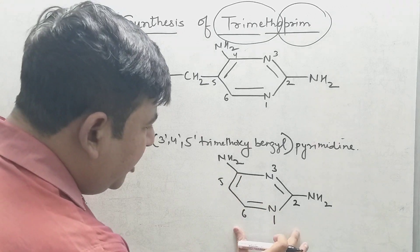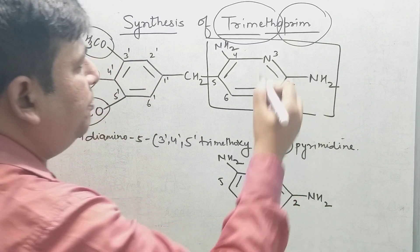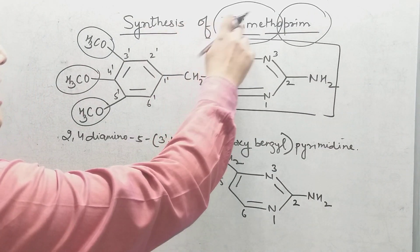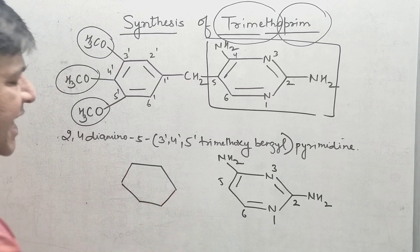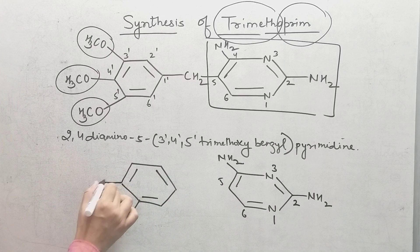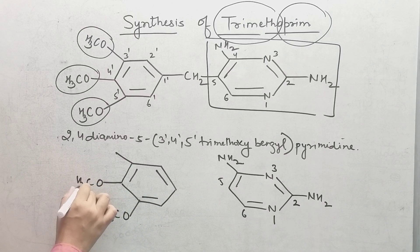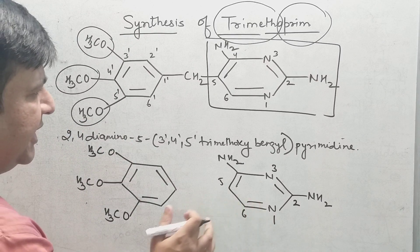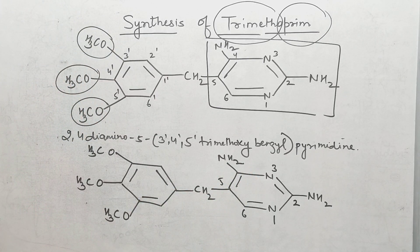This is the first part of trimethoprim. The second part is a benzene ring with three methoxy groups — OCH3, OCH3, OCH3. Both rings are joined by one carbon, that is a CH2 group. This gives the structure of trimethoprim.